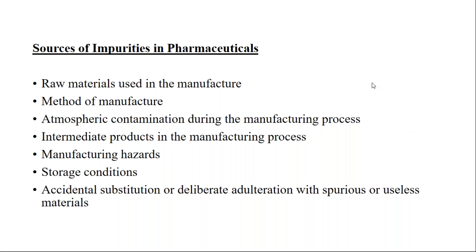So in the previous class, we saw a few sources of impurities in pharmaceuticals. We saw that impurities may arise from raw materials used in manufacture, from the method of manufacture, from atmospheric contamination during the manufacturing process, from intermediates present in the manufacturing process, and manufacturing hazards. So storage conditions and accidental substitution — I rushed through those a little, so I thought I would explain them in a bit more detail.